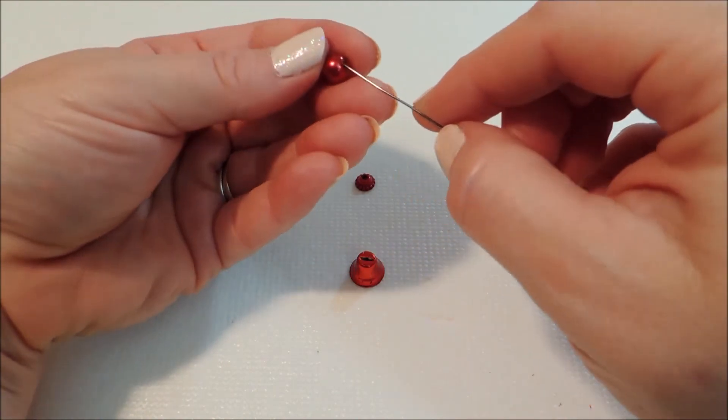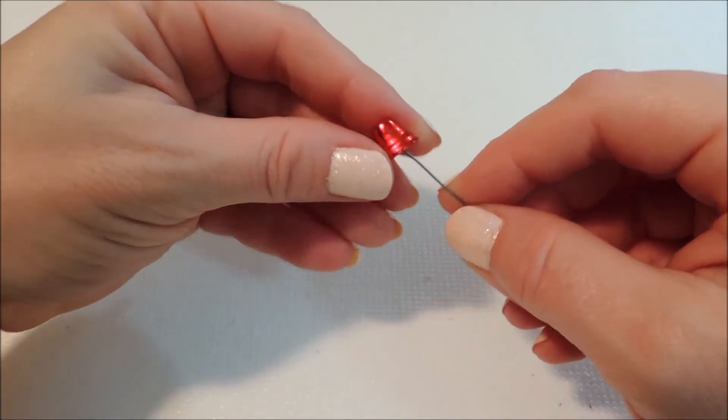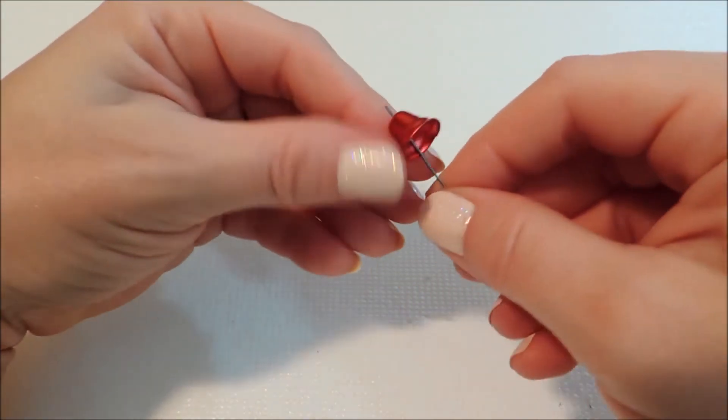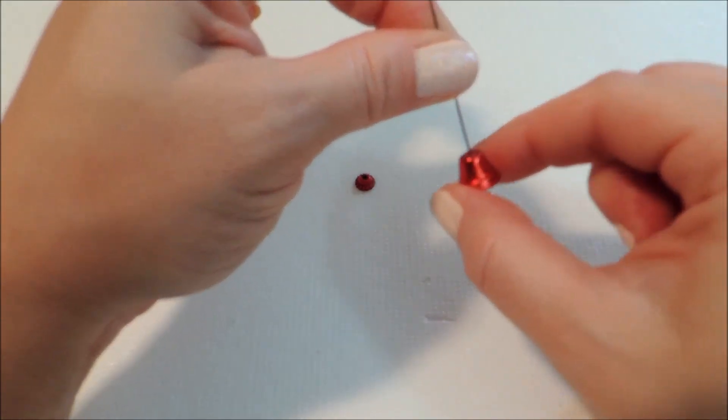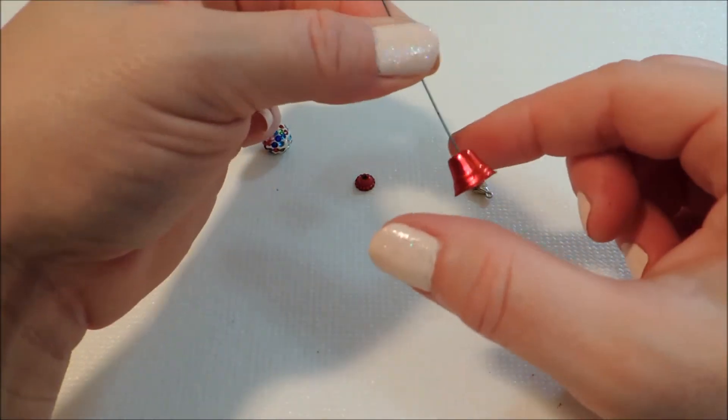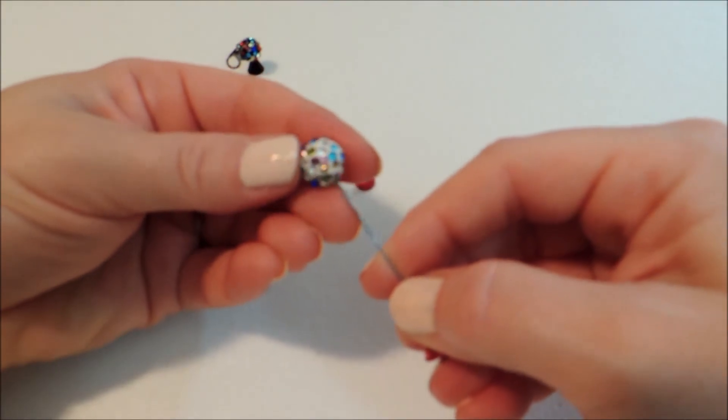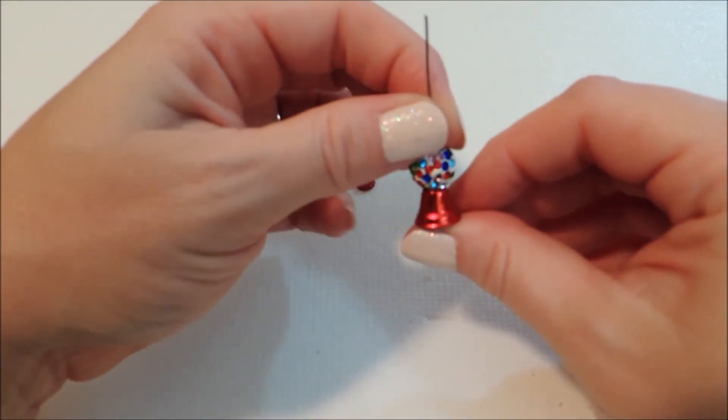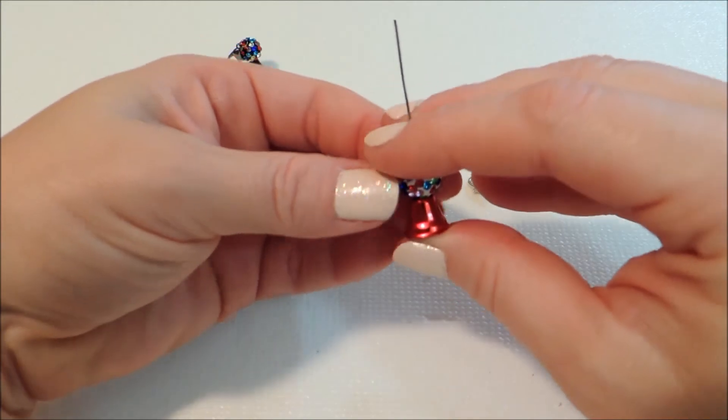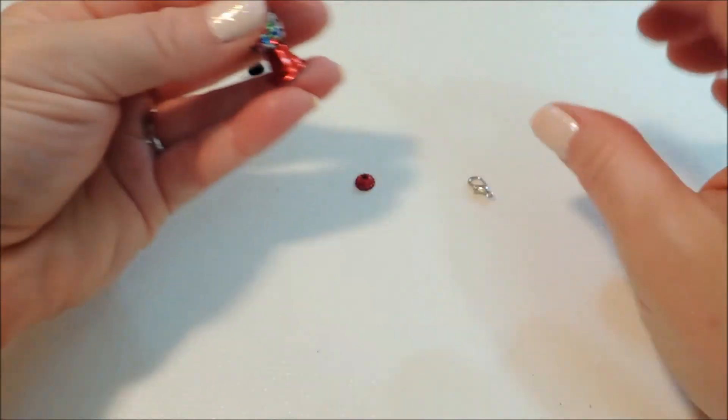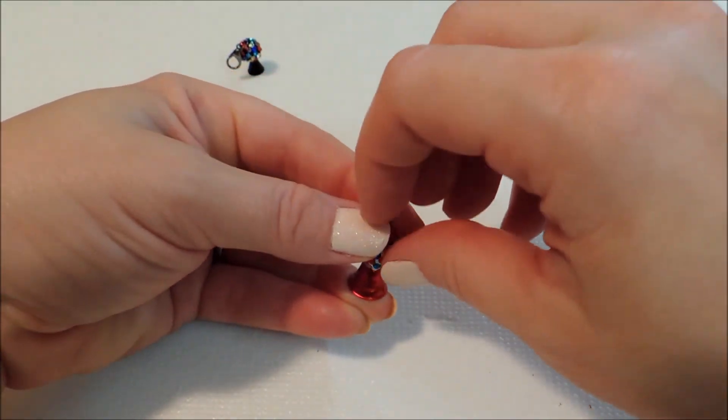So you just take your head pin and first put on your pearl bead, and then your Christmas bell. You can see that that really can't go side to side now with that pearl inside of there. Then put your gumball bead on top, and then our little bead cap topper.